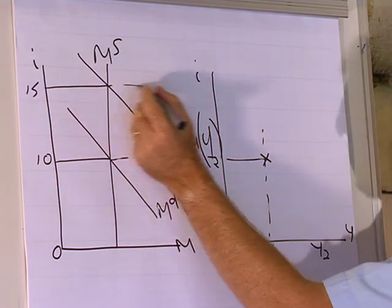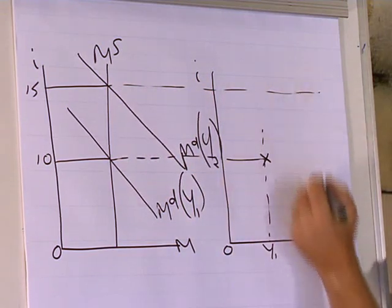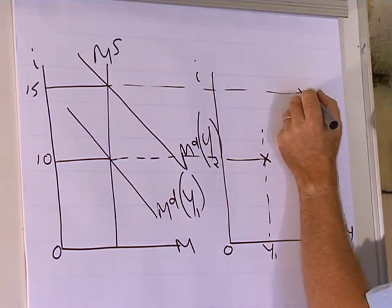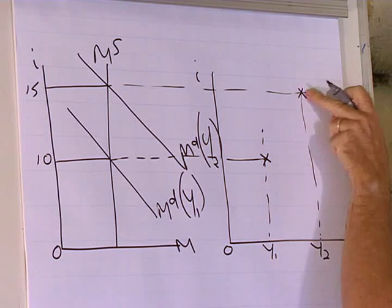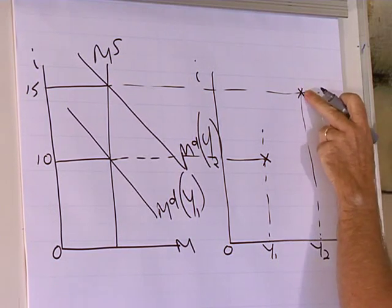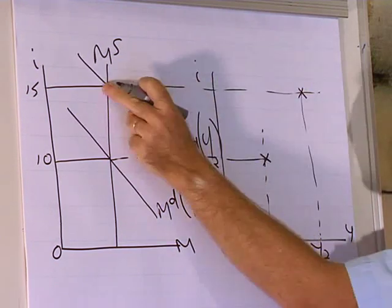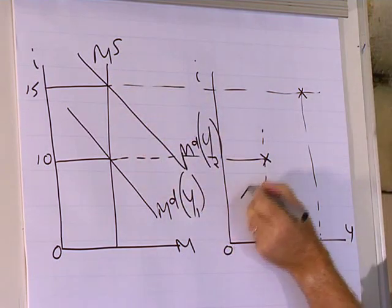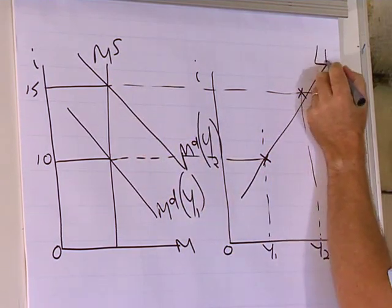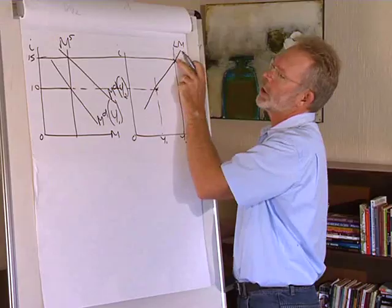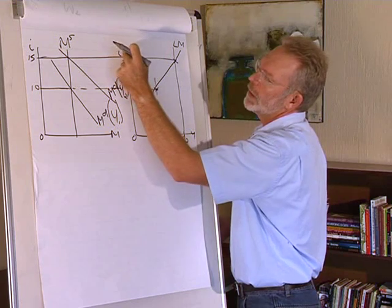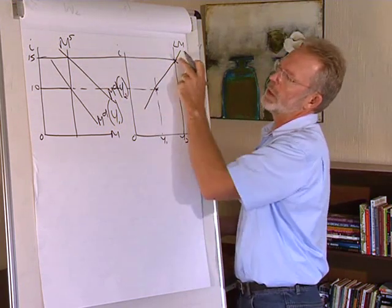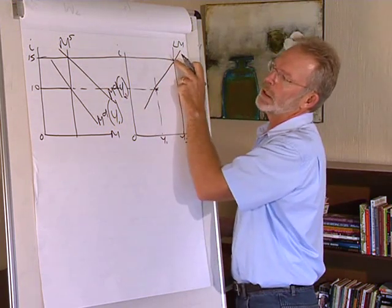So the interest rate of 15% corresponds with an output level Y2. This point also represents a point where the financial market is in equilibrium. If we link these points, we have the LM curve showing different combinations of interest rate and output where the financial market is in equilibrium.